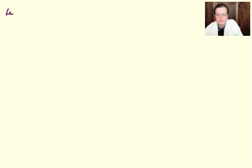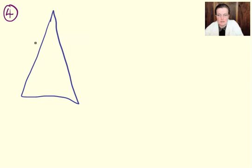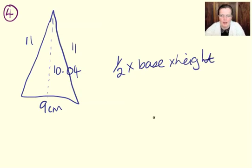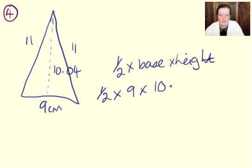Next one, number four. We've got, it's another isosceles triangle. Iso same, skelos legs. 11, 11, 9 centimeters. Ah, now you can see how this caused you trouble because it's a bit of a guessing game as to what number equals what, isn't it? 10.04. So, it's half times the base times the height. I think we can agree the numbers aren't so kind here, are they?